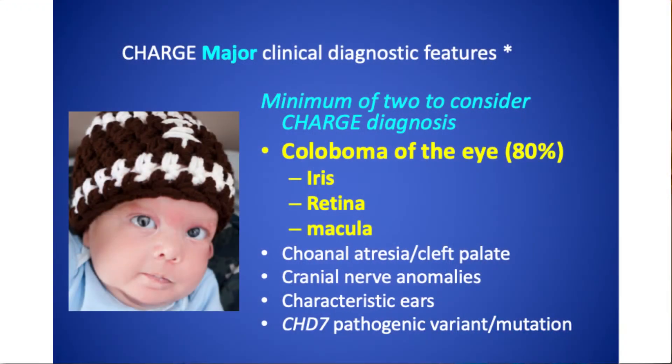The first of these features is coloboma of the eye. About 80% of people with CHARGE have colobomas. This can be in the iris, the retina, or the macula. When the eye is forming, the eyeball forms and comes around and kind of zippers closed along the bottom. If there's a problem with that zipper closing — if there's a gap — you're going to end up with a coloboma or a cleft in the eye.